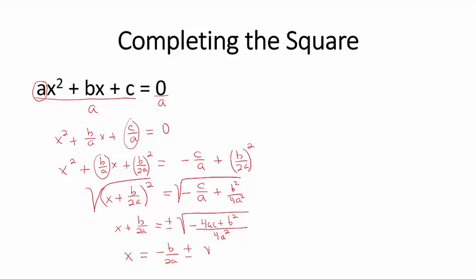We can take the square root of the denominator and then rearrange these terms here, b² - 4ac over the square root of 4a².